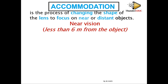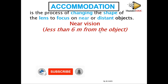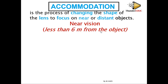When talking about near vision, we refer to an object less than six meters away. More than six meters away is a far object. To understand near vision, there are some muscles you need to know.